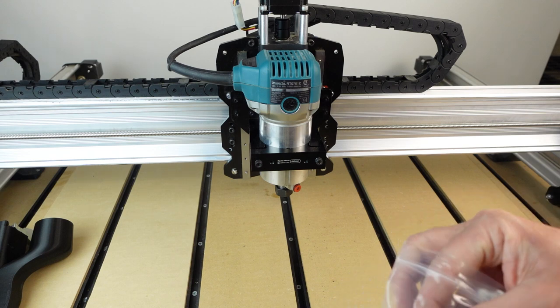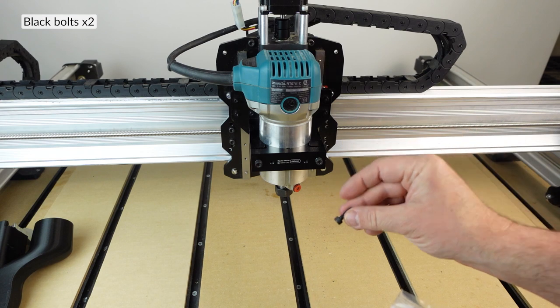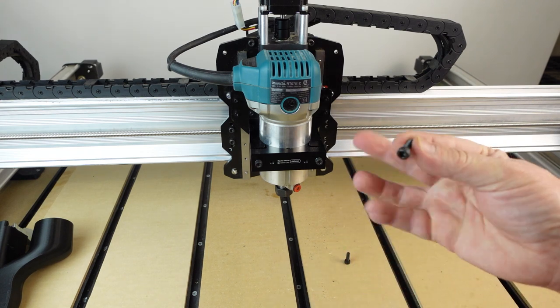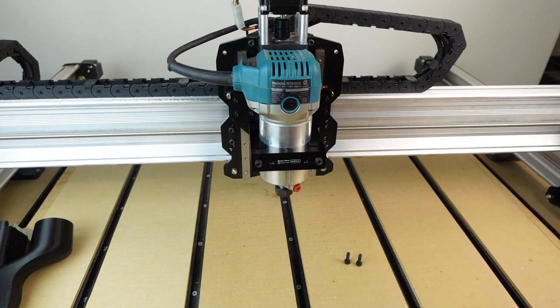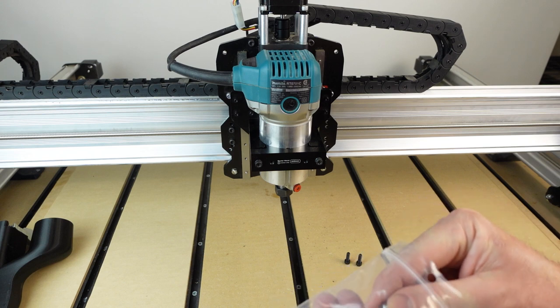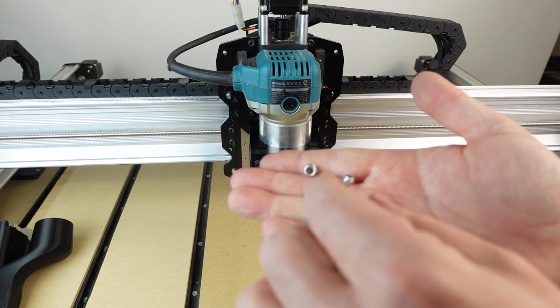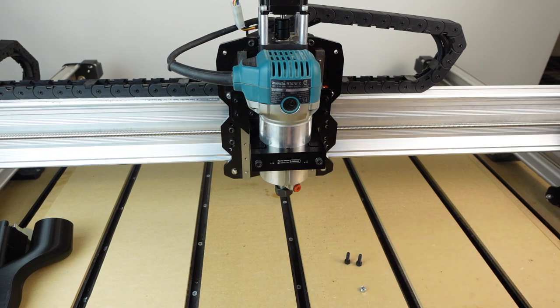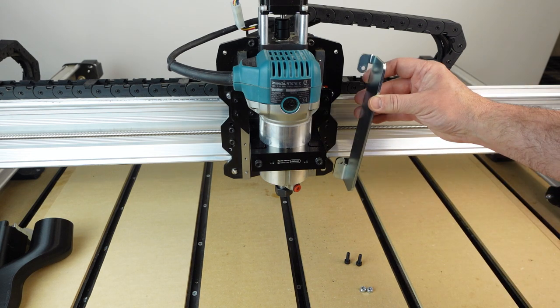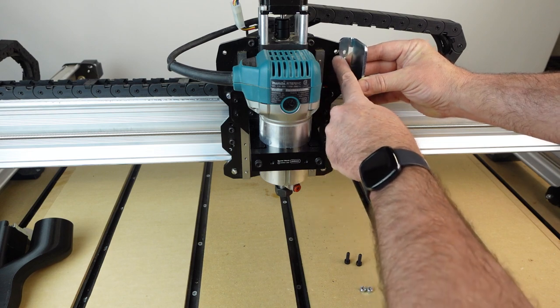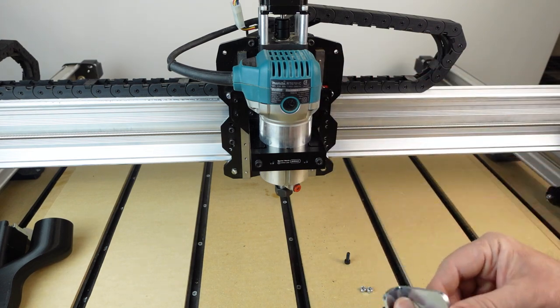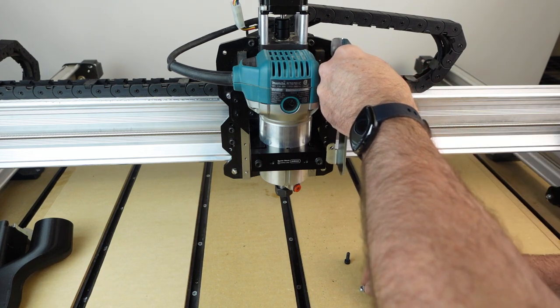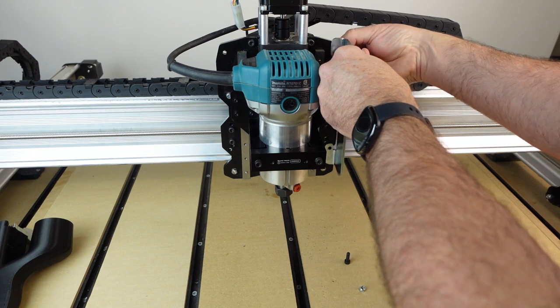Now it's time to install the router mount. From the hardware bag remove two of the black bolts. Remember that we had two different sizes of nylon lock nuts. Now we're going to utilize the two larger ones. The mounting bracket will utilize the top hole and will align with one of the holes on the bottom. We'll start at the top. Put one of the bolts through the gantry and the mounting bracket and then fasten by hand the nylon lock nut.